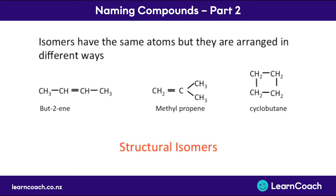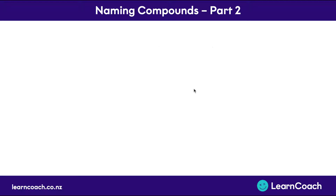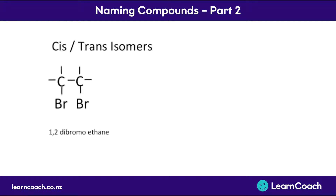In your exams, you might have to come up with different structures with the same number of atoms. The next type of isomer we're going to talk about is called geometric isomers, and this only occurs when we have a double bond. But let's look at single bonds first.